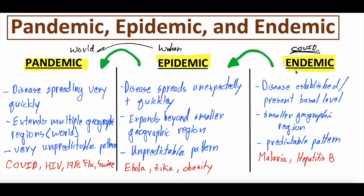The severity of each of these varies depending on how you're thinking about severity. An endemic disease in a population can sometimes cause more death than an epidemic — it might just be a severe disease, while the epidemic may not have a high mortality rate, and even though it's spreading more quickly, patients aren't getting as sick. These words don't necessarily categorize how severe or deadly a disease is; rather, they categorize the spread of that disease.